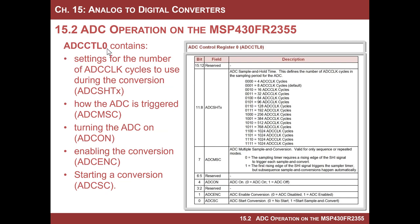ADC control register 0 has settings for the number of clock cycles used during the conversion — the default is 8, but I usually bump that up to 16. You can think of it in terms of how fast the incoming clock is. If I choose 1 MHz and it takes 8 ADC clock cycles, you get roughly 125 kilo samples per second. I always want to use SM clock, and I choose 16 clock cycles because it slows things down to a manageable rate — but you can make the conversion ultra slow if you want.